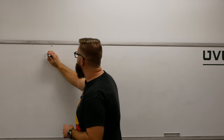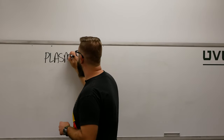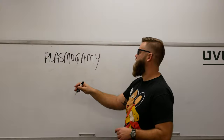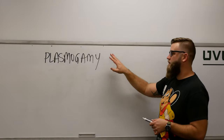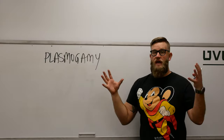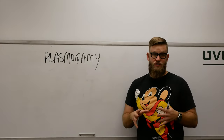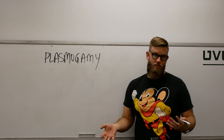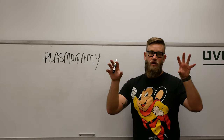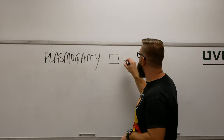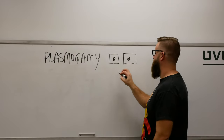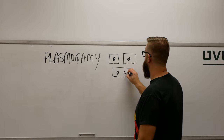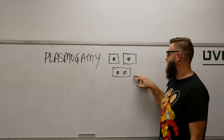I'm going to write them in a specific order. The first one is plasmogamy — basically two cells that have joined together into one larger cell, but their contents are still separate. Particularly, their haploid nuclei are separate. So it's like we have two friends: cell, nucleus, nucleus, and they come together.